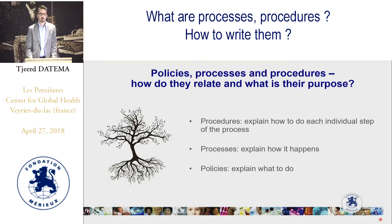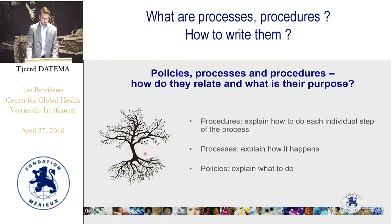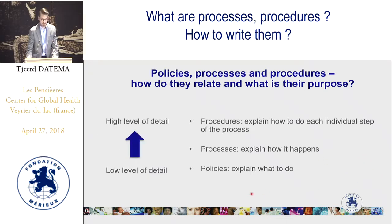Going back to the different types of documents — policies, processes and procedures — how are they related? Policies explain what to do in a broad and general way; processes explain how it happens; and procedures explain how to do each individual step of the process. I like to visualize their relationship with the picture of a tree: policies are the root, the foundation of the organization, providing the framework for what we are going to do. The stem and branches are the processes, explaining how things happen in the laboratory. The leaves are the procedures — the SOPs — with all the nitty-gritty details. You go from a very low level of detail in policies to a very high level of detail in the procedures.